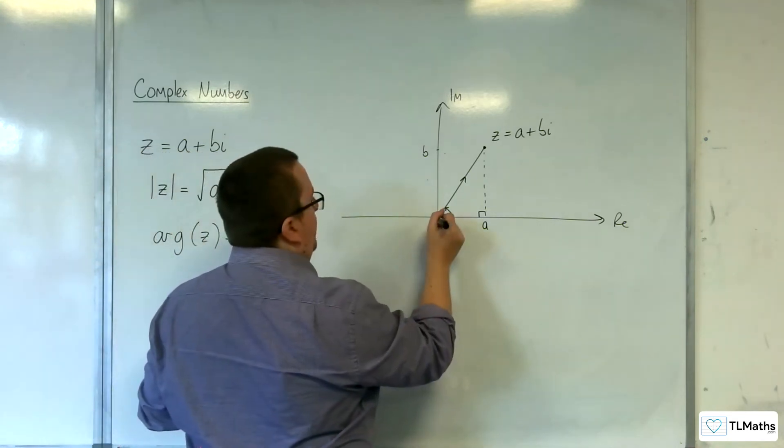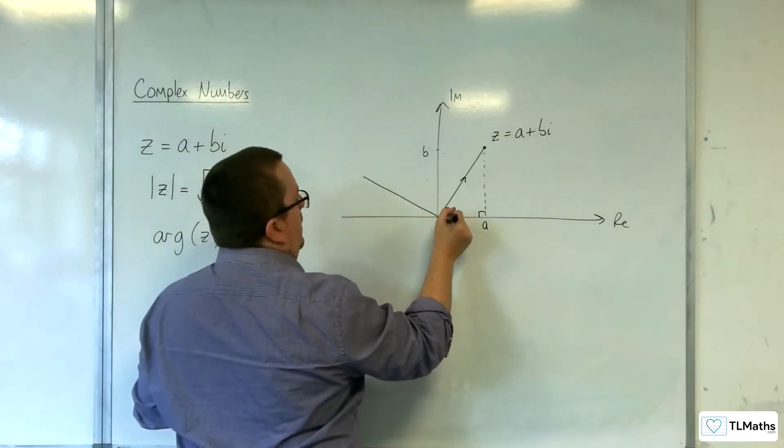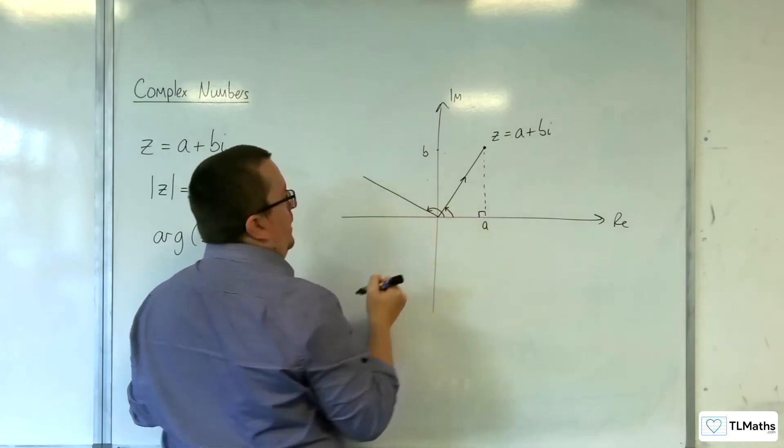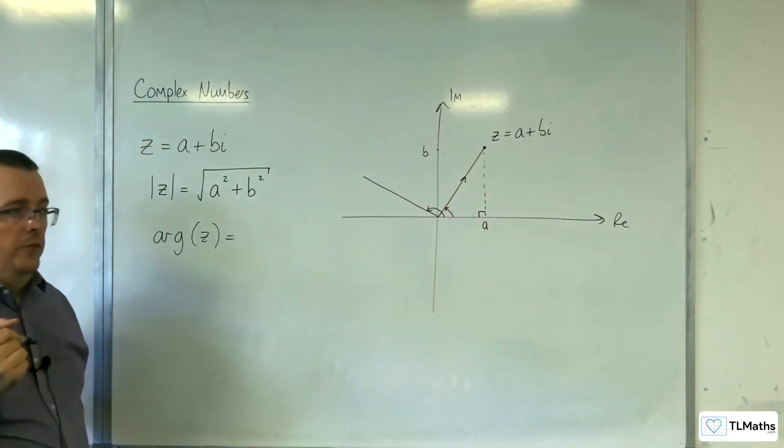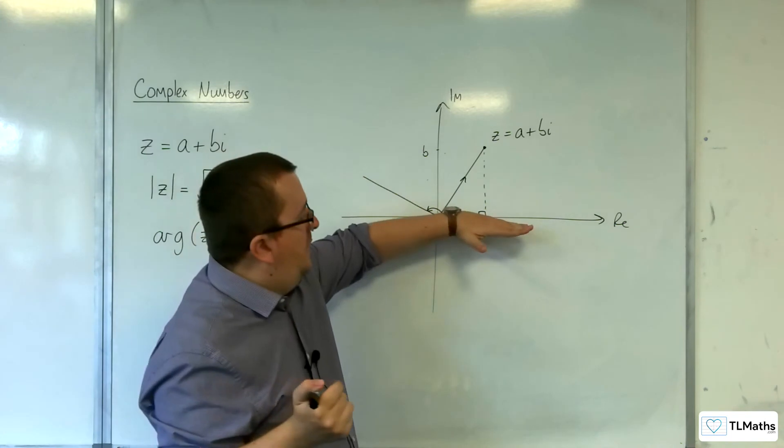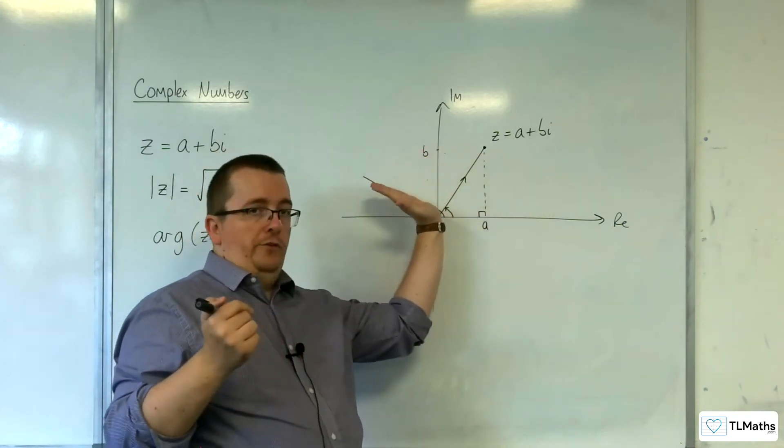So if it was pointing over here, for example, then my argument would be this angle here. The angle from there, and then round to meet the complex number.